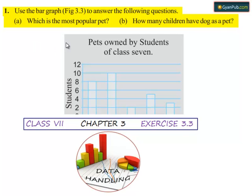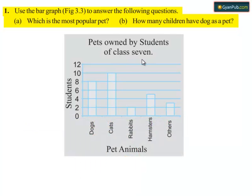Now question number 1, use the bar graph to answer the following questions. Here the pets owned by students of class 7 were given. The pet animals are taken on the x-axis and the number of students were taken on the y-axis.